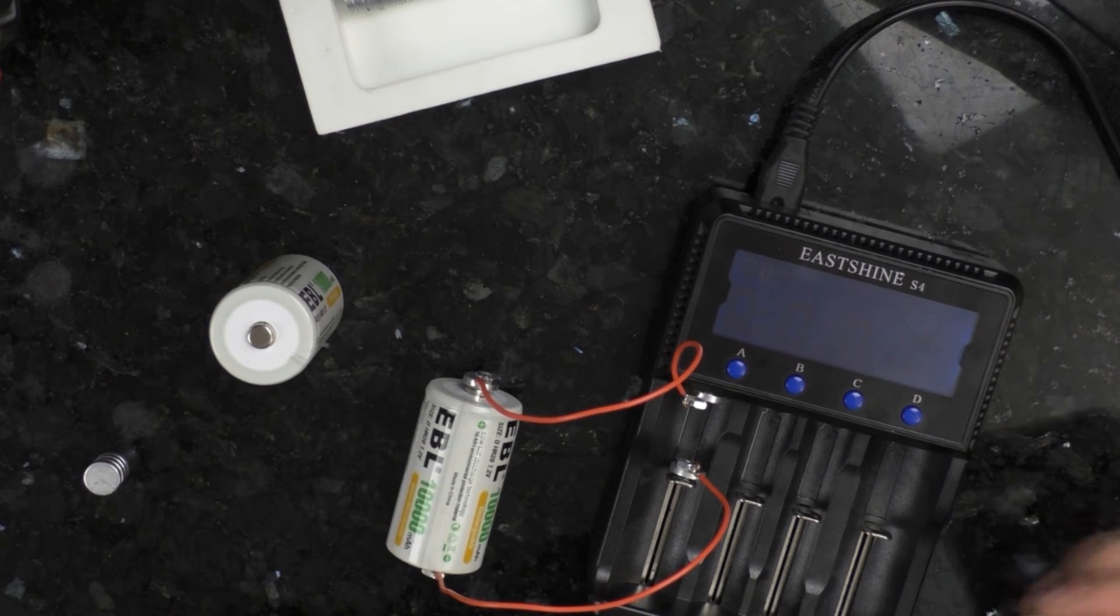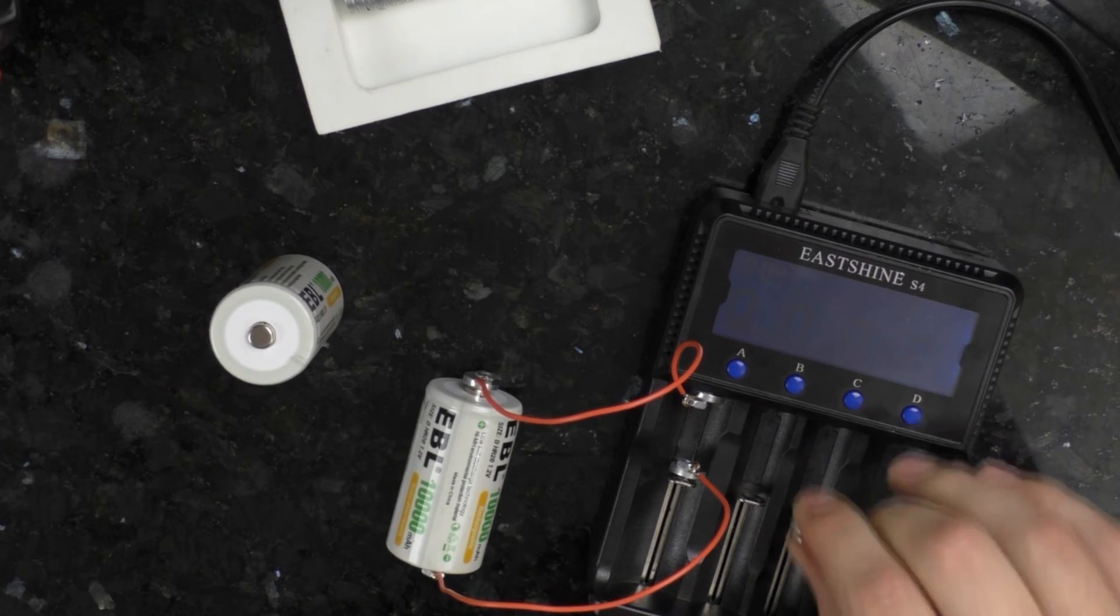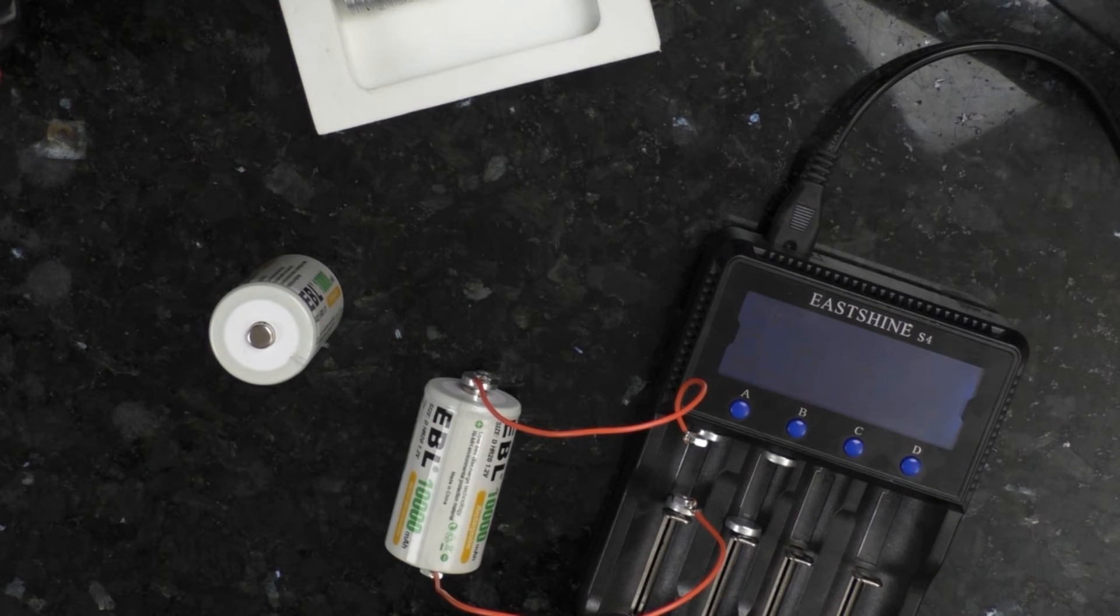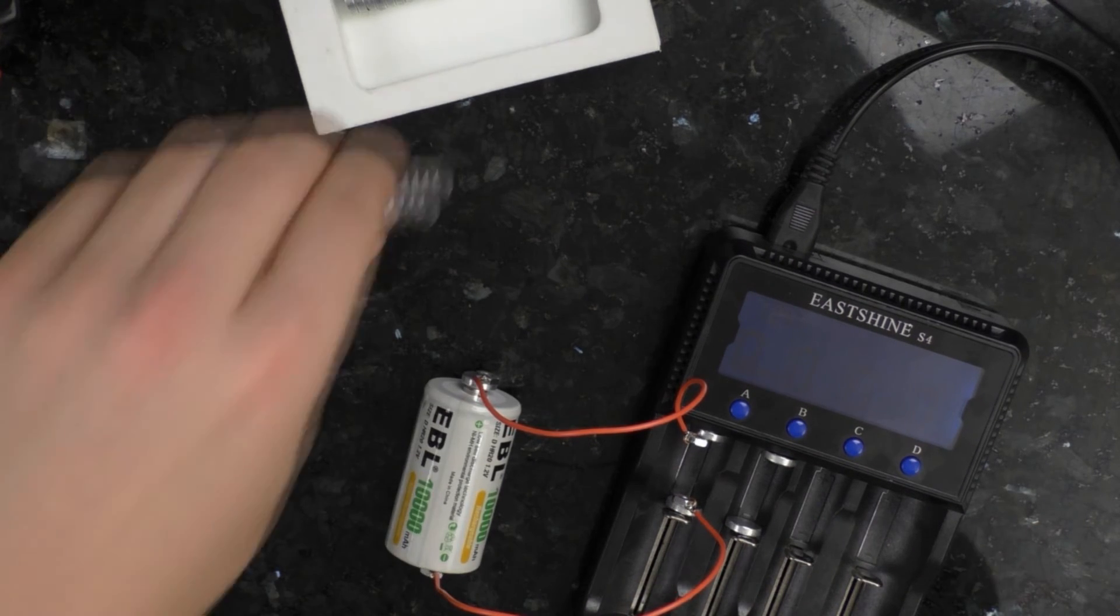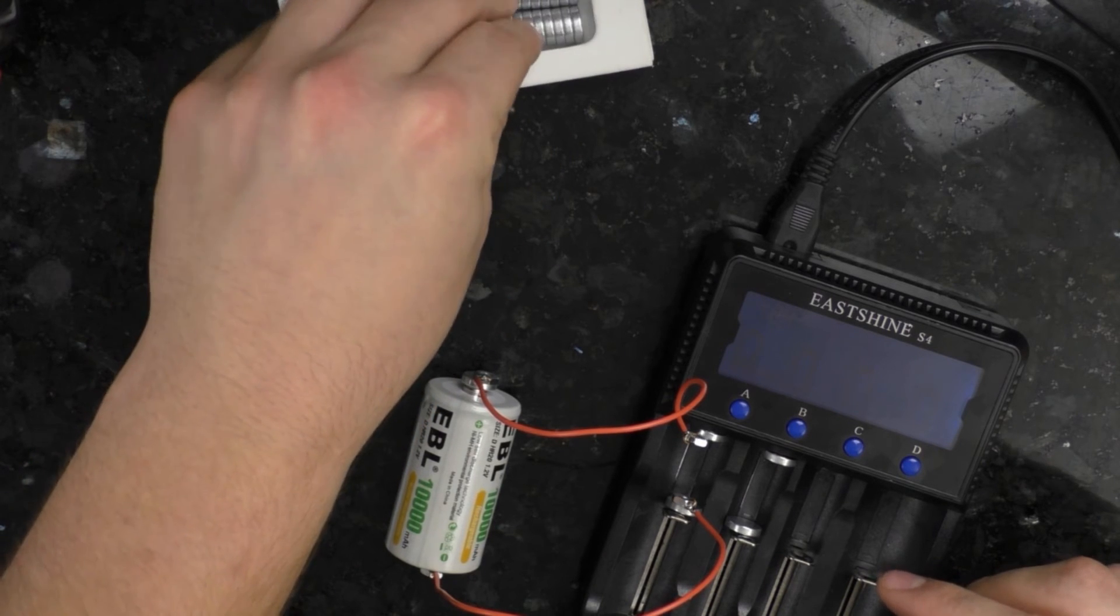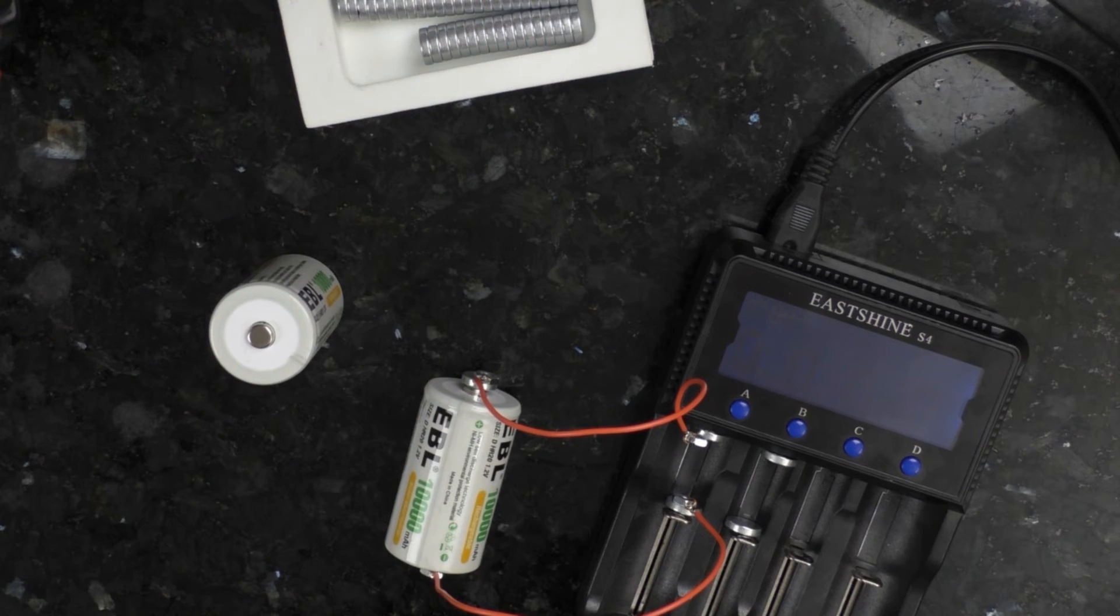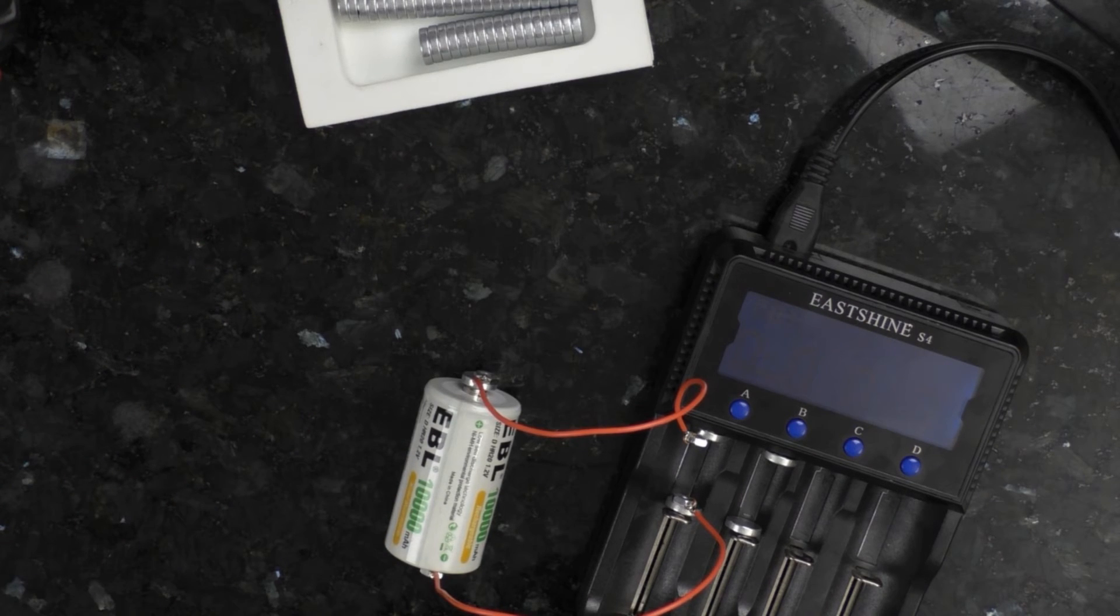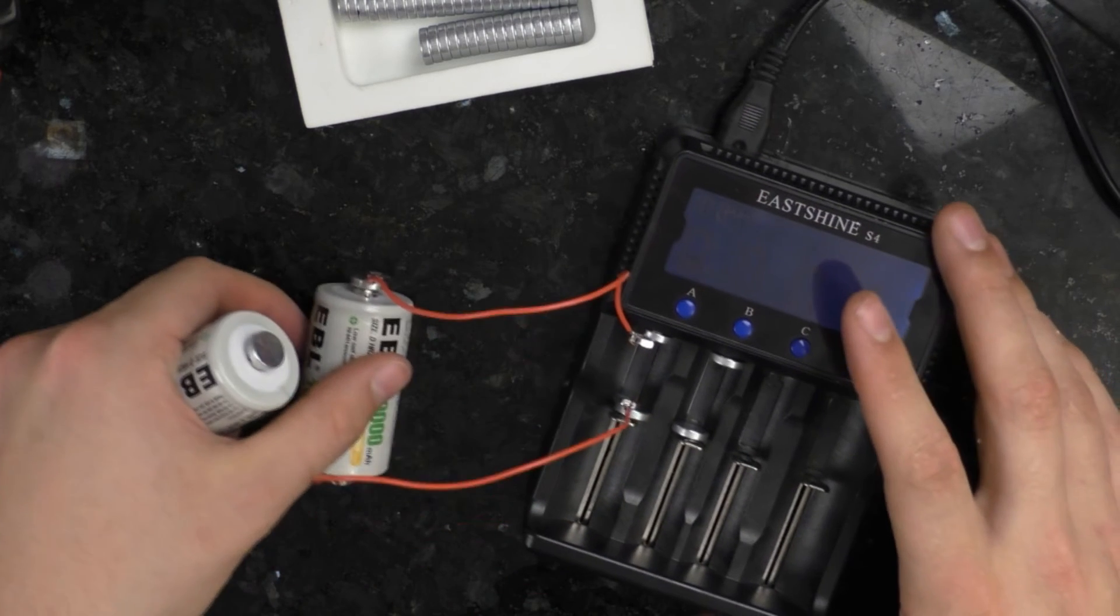And this will charge the battery. And it will shut off automatically, just like it does with the double A's, because this specific circuit detects the voltage. When the voltage goes up, it shuts off charging. But once again, you have to be careful because some of these things rely on thermal sensors. And you definitely do not want to do this with a thermal sensor-based unit because that won't be able to detect anymore because this is obviously out of here.